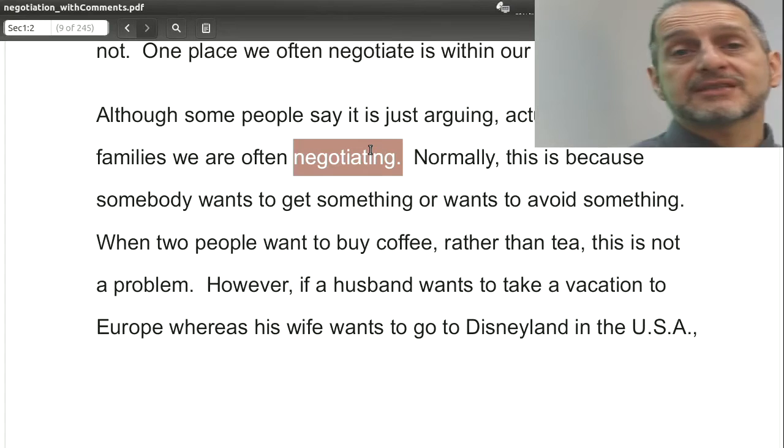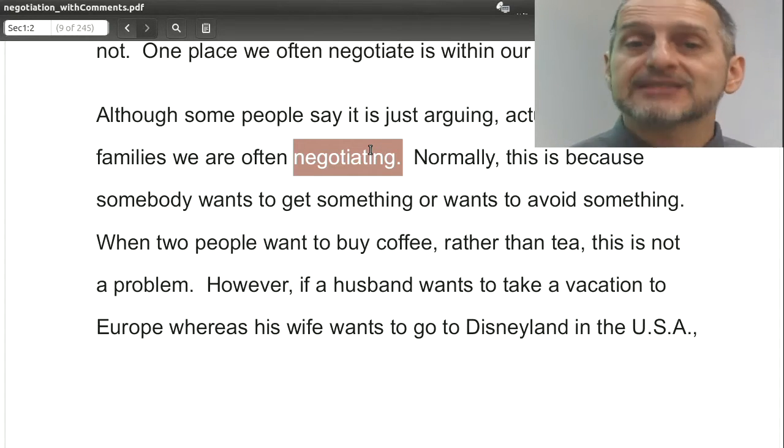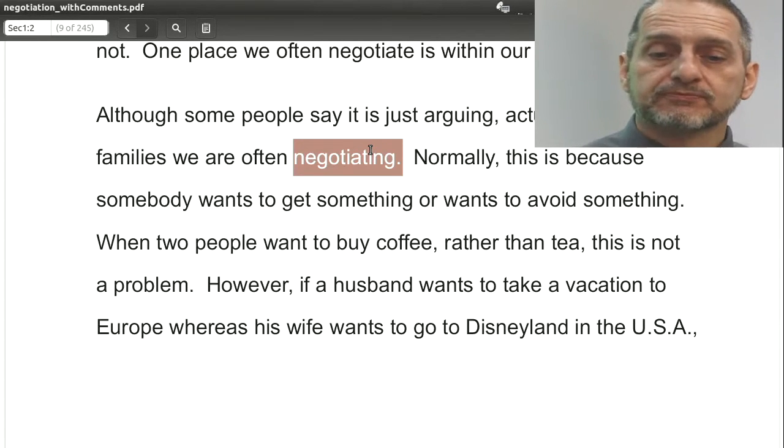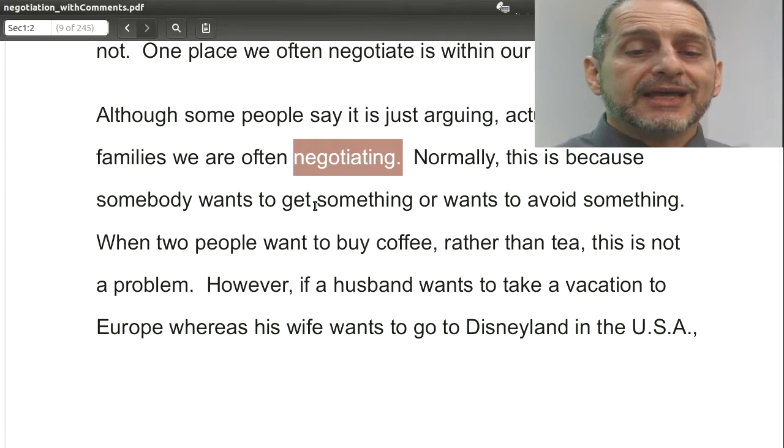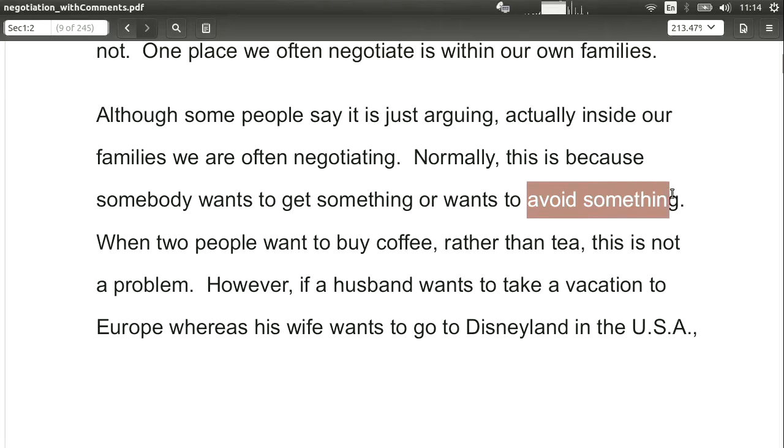Now when we say satisfies both parties, we don't mean both groups get everything they want. That's not the case, and we're going to talk about that in future chapters. In any case, what we're talking about here specifically is that somebody wants to get something, or wants to not get something, or avoid something. You would like to avoid failing your class. You would like to get a high grade. So you want to get something, and or you want to avoid something.